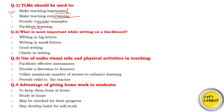Question number 2: What is most important while writing on a blackboard? Options are: writing in big letters, writing in small letters, good writing, or clarity in writing. The source answer says good writing, but I don't think every teacher can write beautifully. What is necessary is clarity in writing. If there is clarity, children will understand. The main thing is clarity. If writing is not clear, children won't understand. So the D option — clarity — is the right answer.